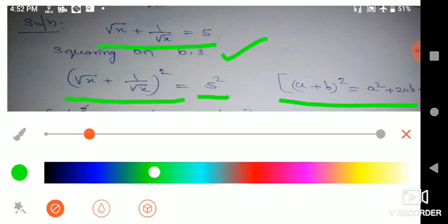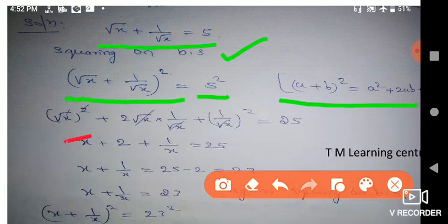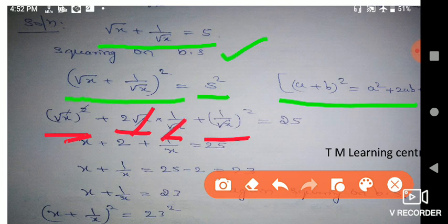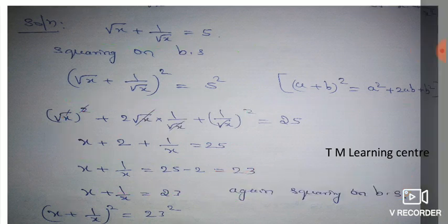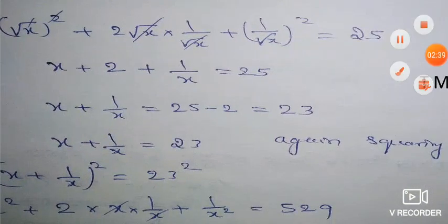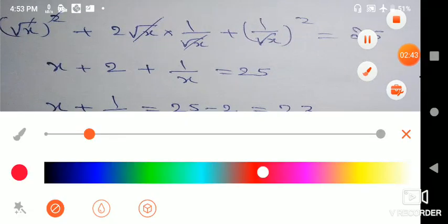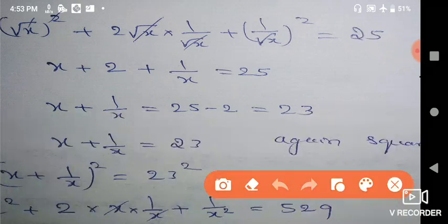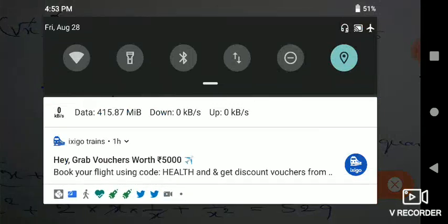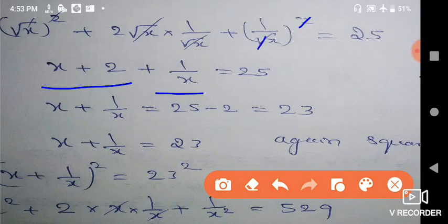Now apply this formula. So a² + 2ab + b². Here root x times root x — the square and root cancel — gives x. Plus 2, and here 1/x. The square and root cancel giving 1/x. So that is 25. Next step: x + 2 + 1/x equals 25.